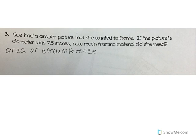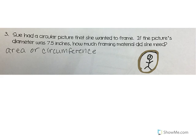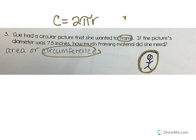Sue had a circular picture that she wanted to frame. If the picture's diameter was 7.5 inches, how much framing material did she need? The frame goes around a picture. So if I'm talking about a frame, am I talking about area or circumference? I don't want to cover up my picture — I want to put the frame around it. So I'm going to talk about circumference. I have C equals 2πr, or C equals π times diameter. Did it give me the diameter or the radius? It says the diameter was 7.5 inches, so I'm going to use the formula that has diameter in it.